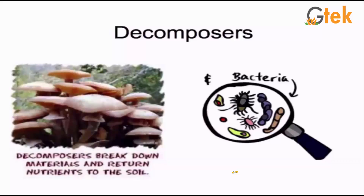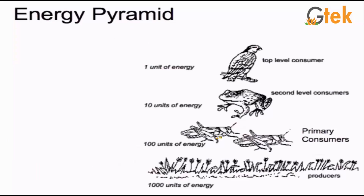Let us see about the energy pyramid. Here the total energy is transferred from one level to the next level. In the producer level it has 1000 units of energy, which is got from the sun. The primary consumer at the second level — the energy transformation is reduced to about 100 units of energy going to the primary consumer.